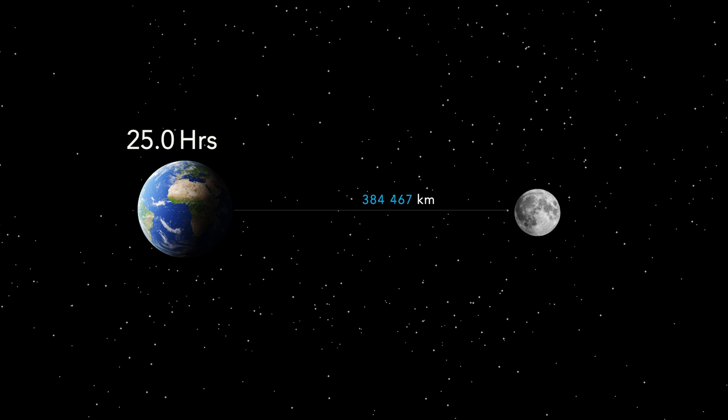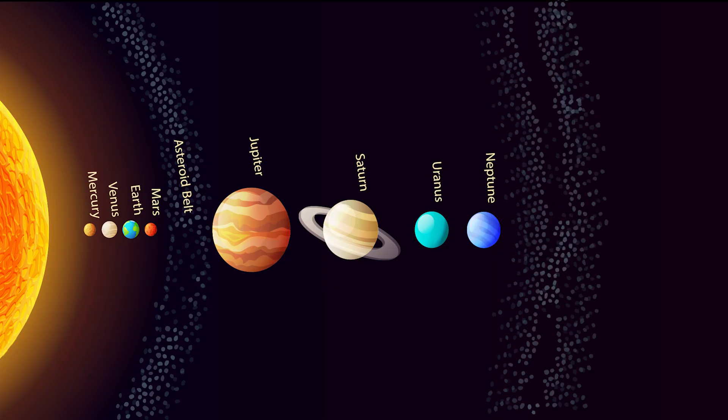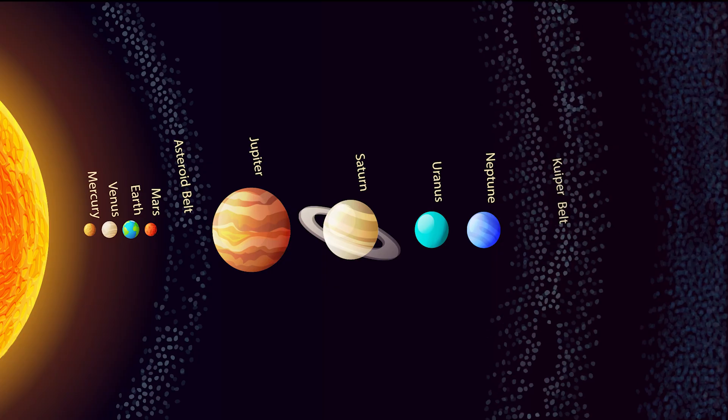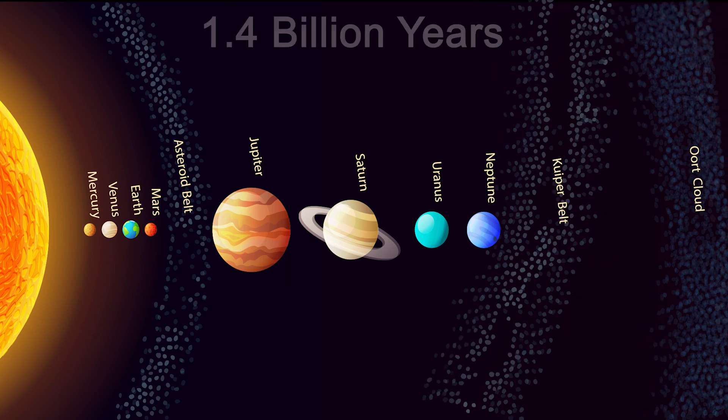During this period, Earth's day also extends to 27.3 hours based on the moon's continued recession of about 2 centimeters per year. The distant reservoirs of comets, the Kuiper Belt and Oort Cloud, will be disturbed as nearby stars pass close to the sun in about 1.4 billion years. This could send a shower of comets into the inner solar system, potentially leading to impacts on the remaining planets.